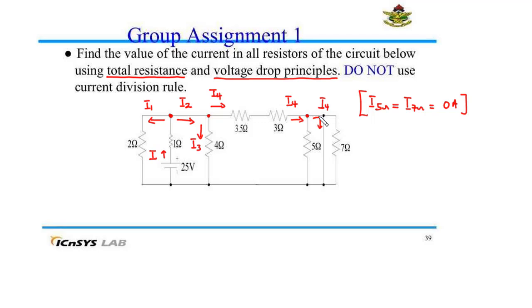We go through this loop without passing through any other circuit element except the 5 ohm resistor — so it has been short-circuited. Similarly, we go through another loop without passing through any other circuit element except the 7 ohm resistor — so it has also been short-circuited. When a resistor has been short-circuited, no current flows through it. So we can redraw the circuit by eliminating the 5 ohm and the 7 ohm resistors.